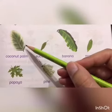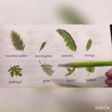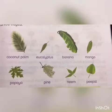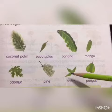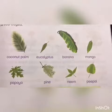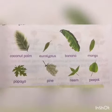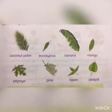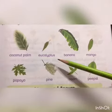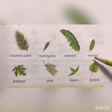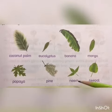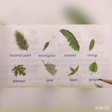Some leaves have spiky edges like the coconut palm tree, and some have curved edges. Some are very small, some are very short, and some are very long. Let's read the names of the leaves: coconut palm, eucalyptus, banana, mango, papaya, pine, neem, and peepal.